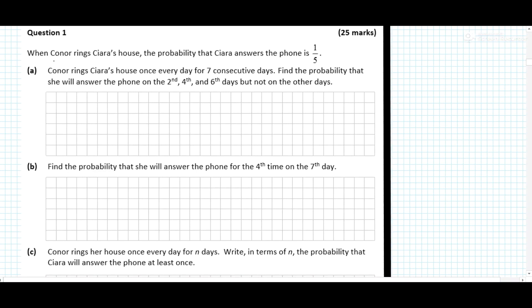Okay, so from the question we know that the probability that Kira answers the phone, the probability of success is 1 over 5, and we know that the probability of failure is going to be 4 over 5, because that's 1 minus 1 over 5 is 4 over 5.